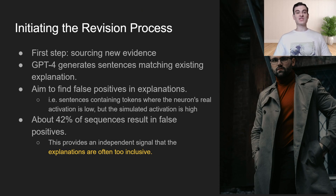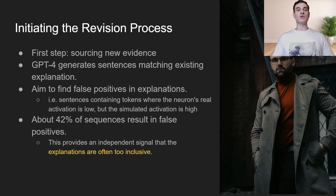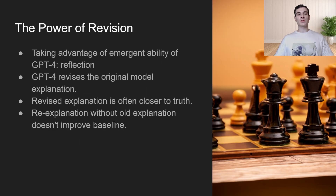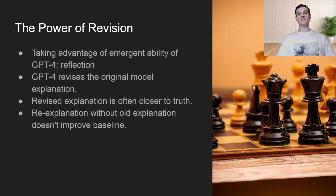Thus, they introduced a revision process. The first step is to source new evidence: GPT-4 generates sequences that match the existing hypothesis, aiming to find sentences where the token's real activation is low but the simulated activation is high — indicating a false positive and a possible area where the hypothesis could be improved. They found that about 42% of generated sequences had false positives, providing an independent signal that the explanations are typically too general.